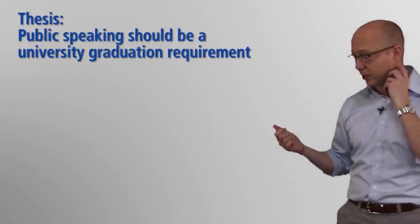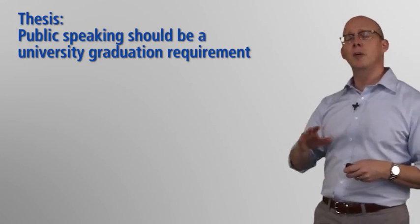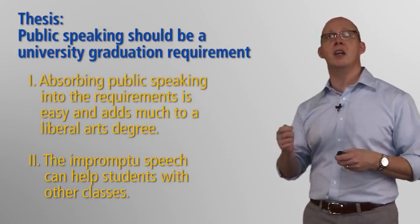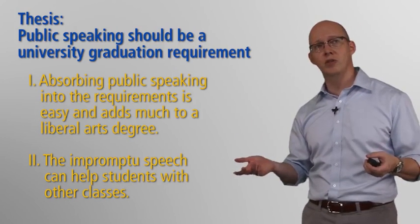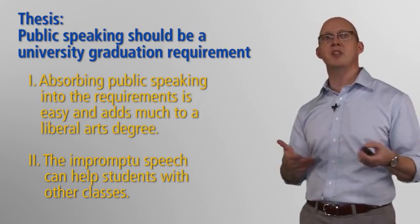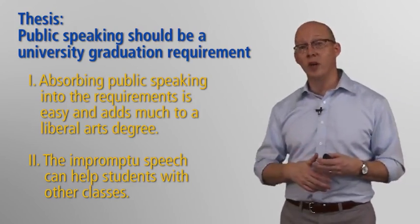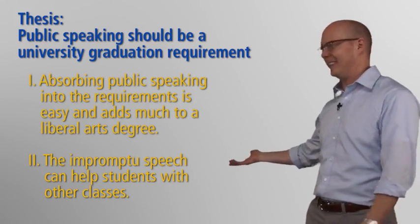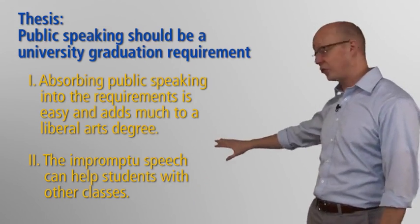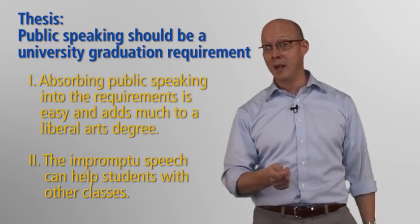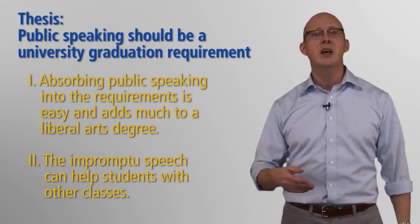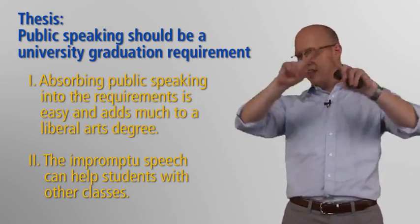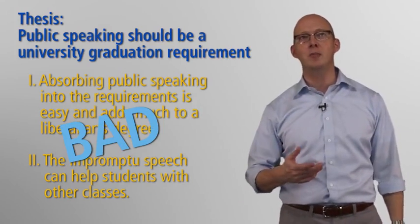Going back to this thesis — 'Public speaking should be a university graduation requirement' — here's a problematic version: 'Because absorbing public speaking into the requirements is easy and adds much to a liberal arts degree, and second, the impromptu speech can help students with other classes.' That first point is huge — it covers the known universe on this topic. The second point is probably much closer to an example or piece of support than an independent main point. In a Venn diagram, that second point is completely contained within the first.